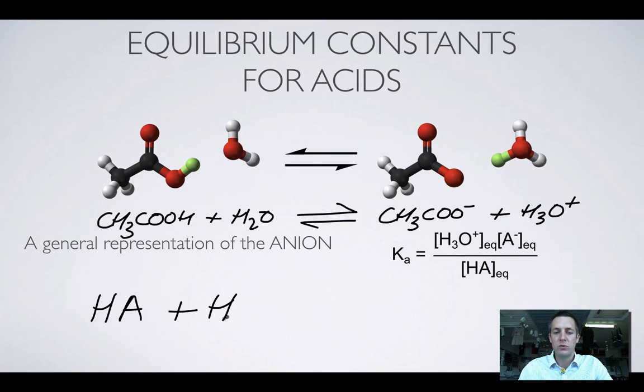And if HA reacts with water, then HA will give its proton, its H plus ion, to the water molecule, and it will form the conjugate base of HA, which is A minus. So that's our general representation of the anion in an acid, and H3O plus.